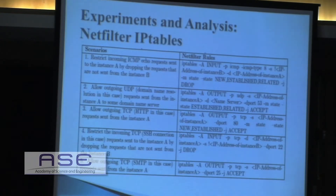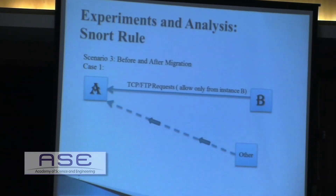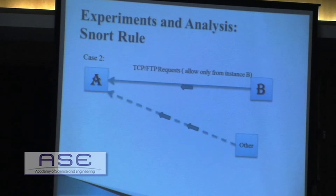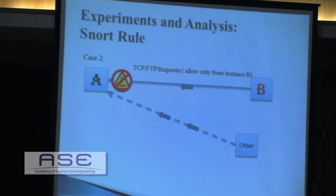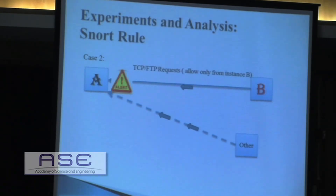We also have a few rules for the intrusion detection system, which alerts on suspicious activity but does not completely reject or drop traffic. For example, a TCP rule with an FTP request allows communication only from Instance B and generates an alert for unauthorized communication. But if Instance A's IP changes, there will be no alert sent to admins. In case two, if Instance B's IP address changes, there will be a false alarm generated for the legitimate communication between A and B.